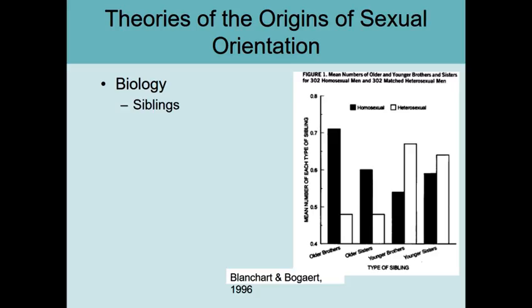It's kind of a trippy thing to look at, so bear with me as I walk you through this graph. This is research from Blanchard and Bogaert in 1996. Along the bars: black bars represent respondents who self-identify as homosexual; white bars represent those who self-identify as heterosexual. On the x-axis, we're looking at whether they have older brothers, older sisters, younger brothers, or younger sisters. On the y-axis, we see how many of each type of sibling they have.